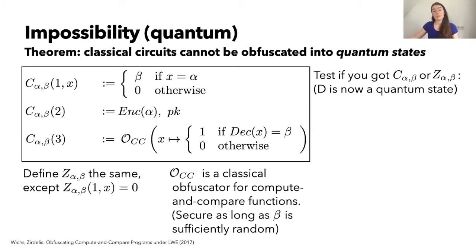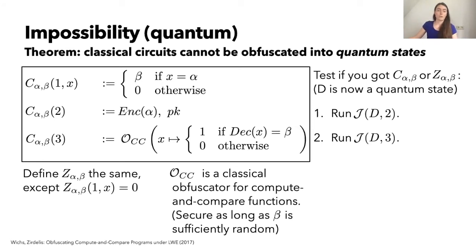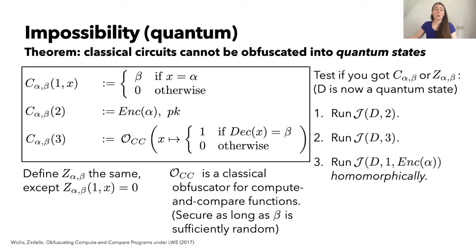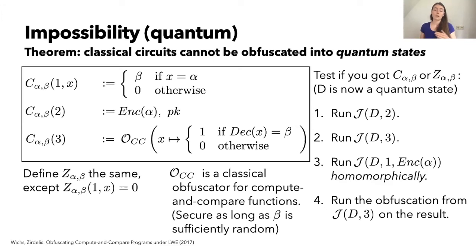To test whether you got C or Z, you first run the second line, running the interpreter on the quantum obfuscation state to get the encryption of α — then you revert the computation to recover the state. You do the same with the third line, obtaining the classical obfuscation of the compute-and-compare function, again reverting afterwards. Then, as your last use of the state D, you homomorphically run the first line — running the quantum interpreter on the obfuscation and an encrypted input — which will give you either an encryption of β or an encryption of zero depending on whether you hold C or Z. After this homomorphic evaluation the obfuscation state D is potentially destroyed. For the final step, you run the compute-and-compare function using the classical obfuscation obtained earlier, getting output 1 if you have C and 0 if you have Z.